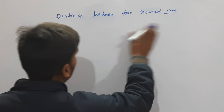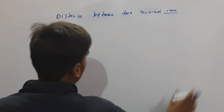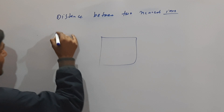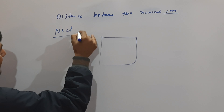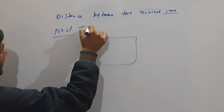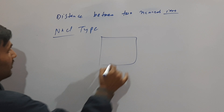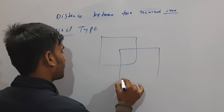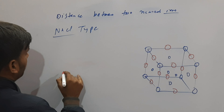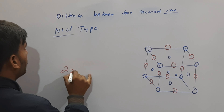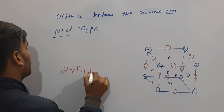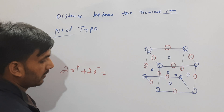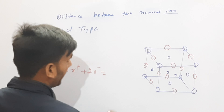इसको हम find out करते हैं तो एक unit cell बनाते हैं NaCl type के लिए देखते हैं। तो यहाँ पर 2R+ + 2R- equal to A.